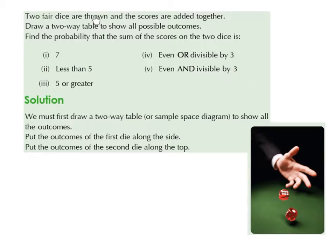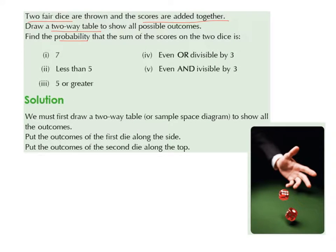Two fair dice are thrown and the scores are added together. Draw a two-way table to show all possible outcomes. Find the probability that the sum of the scores on the two dice is: 7, less than 5, 5 or greater, even or divisible by 3, and even and divisible by 3.